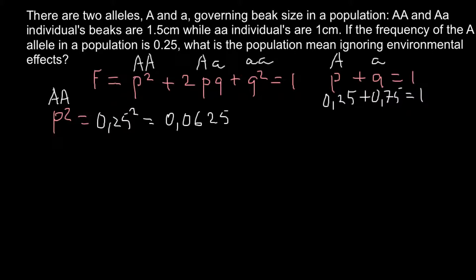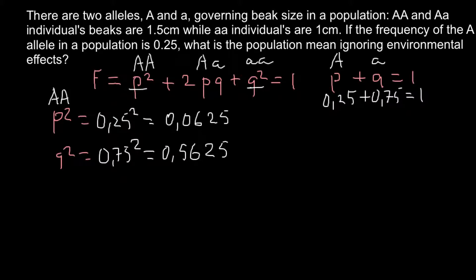We can also find the frequency of the homozygous recessive genotype, which is q². We know q is 0.75, so we multiply this number by itself — squaring it — to find the frequency of the homozygous recessive genotype, which equals 0.5625.